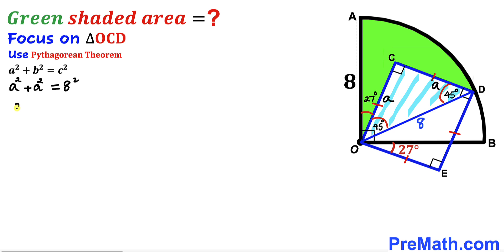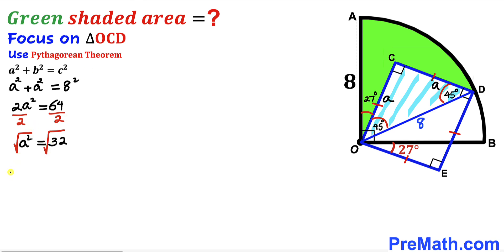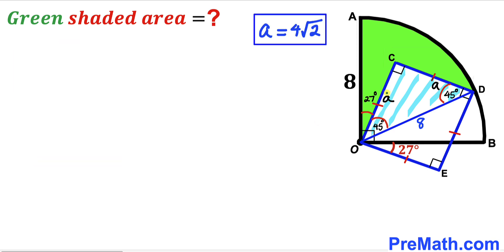Simplifying, 2a² = 64. Dividing both sides by 2, a² = 32. Taking the square root of both sides, lowercase a = 4√2 units. So the side length of the blue square is 4√2 units.